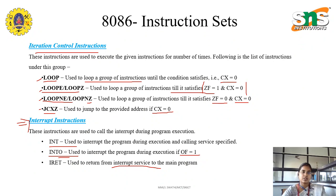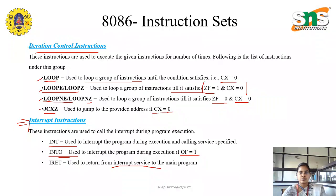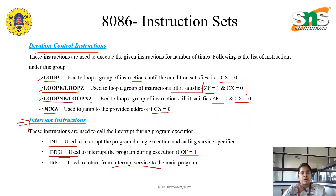Under control instructions, we have two types: processor control and iteration control. Under processor control, we have setting and resetting — that is set and clear. Under iteration control, we have loop conditions to satisfy specific conditions like the zero flag. The last one is interrupt instructions, used to call an interrupt during program execution — INT, INTO, and IRET.